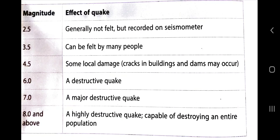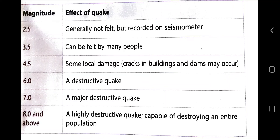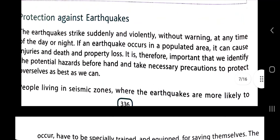Now, the Richter scale values: earthquakes happen all the time, many we don't even know about. Generally, 2.5 is not felt but is recorded on a seismograph. 3.5 can be felt by many people. 4.5 causes some local damage — cracks in buildings and dams may occur. 6.0 is a destructive quake. 7 is a major quake. And 8 is extremely destructive — essentially the end. That is the Richter scale.